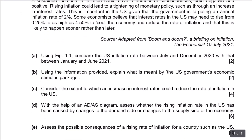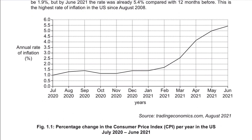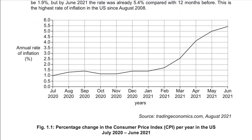The question says: using figure 1.1, compare the inflation rate between July and December 2020 with that between January and June 2021. So basically this question is asking you to compare the inflation rate from July 2020 to June 2021 — in the first six months and then in the last six months. They have given you the inflation rate on the y-axis and the years on the x-axis, basically showing you the trend of how the inflation rate fluctuated between these 12 months.